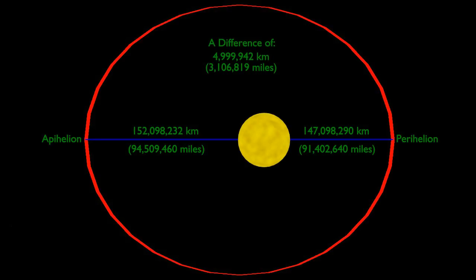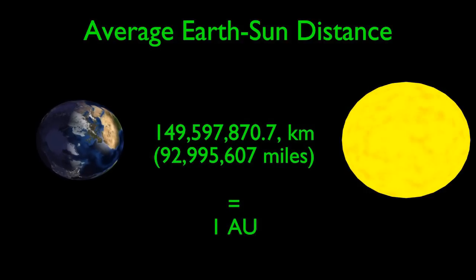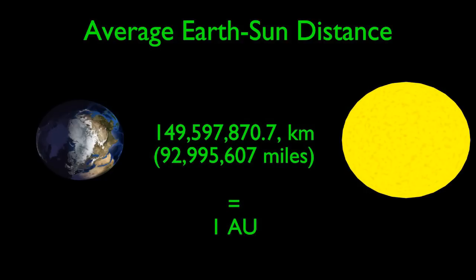This means that the International Astronomical Union has defined 1 AU to be the average Earth-Sun distance, calculated to be 149,597,870.7 kilometres.